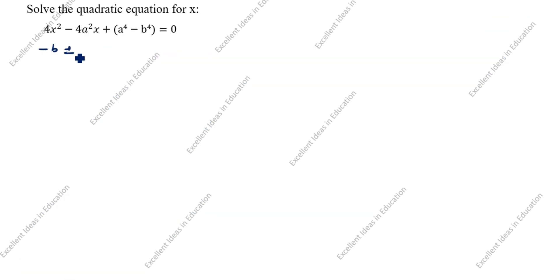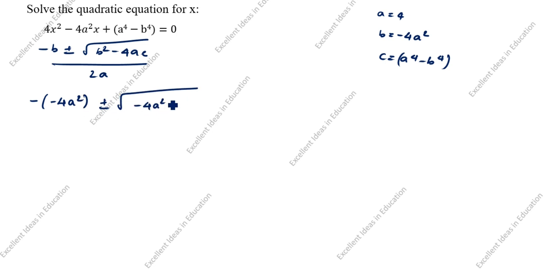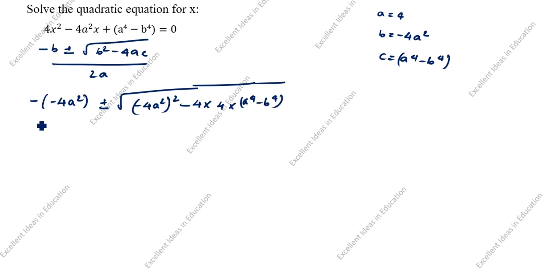Second method uses the quadratic formula: x = [-b ± √(b² - 4ac)] / 2a. Here, a = 4, b = -4a², and c = a⁴ - b⁴. So x = [-(-4a²) ± √((-4a²)² - 4·4·(a⁴ - b⁴))] / (2·4).